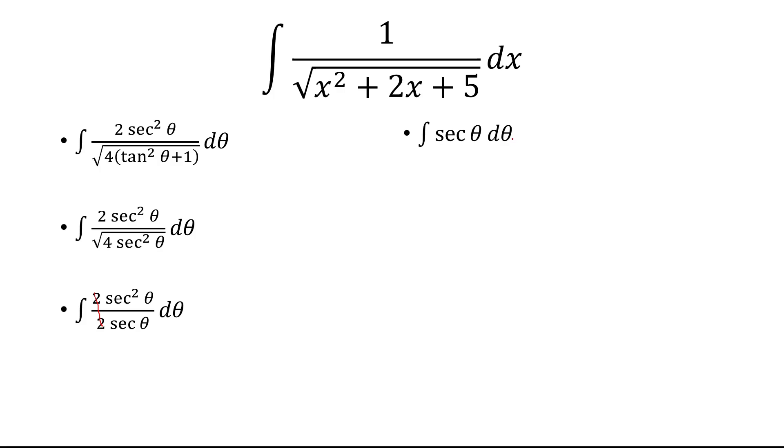So taking the anti-derivative of secant theta, that is just ln of absolute value secant plus tangent, and then plus a constant c.